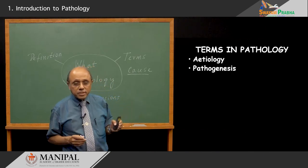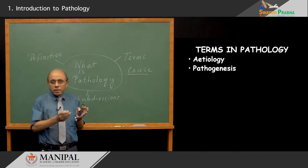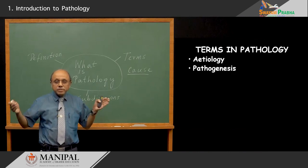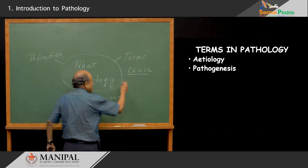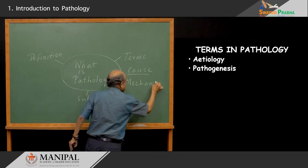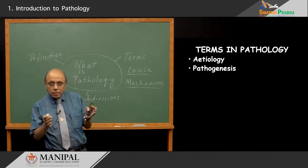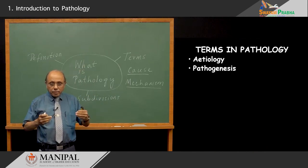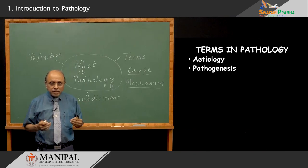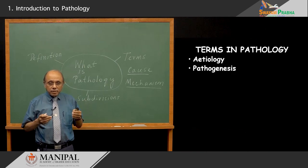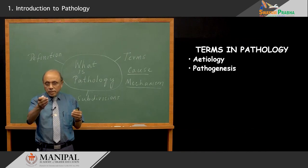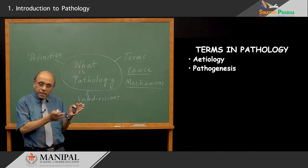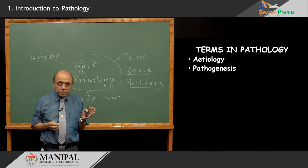The second term commonly used in pathology is pathogenesis. Genesis means evolution — the evolution of the pathologic process. The progression from the initial stages to the later stages is pathogenesis. So, the mechanism of disease progression is pathogenesis. Any disease does not just happen overnight; it happens over a period of time. It starts slowly, then progresses. This initiation, development, and progression are all captured by the term pathogenesis — the evolution of a disease from its beginning, its progress, and its complications.